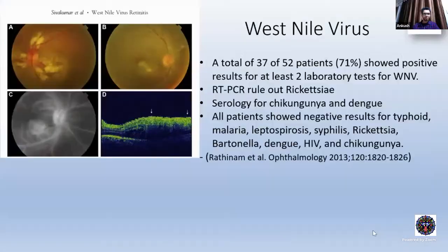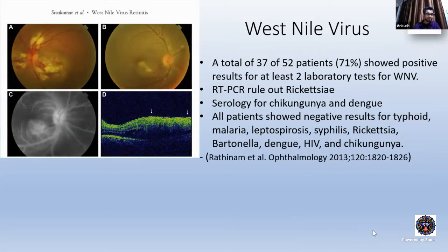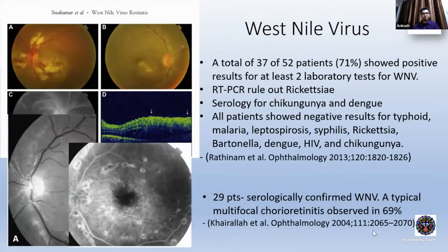A similar morphological pattern has been described for West Nile virus — a strong paper with 52 patients, well-proven, and other entities like rickettsia, chikungunya, dengue were ruled out with serology and PCR. The patients had at least two laboratory positivity for West Nile virus. If you look at the morphology of these lesions, they are fluffy whitish-yellowish lesions at the posterior pole, like described in my previous slides for chikungunya. But in contrast to this morphological presentation, there's another publication for the same virus — West Nile virus — but the morphology is totally different: no frank retinitis, but more of a chorioretinitis, with lesions along the nerve fiber layer, with a typical multifocal chorioretinitis observed in 69% of cases. So the same organism can cause different morphological presentations.